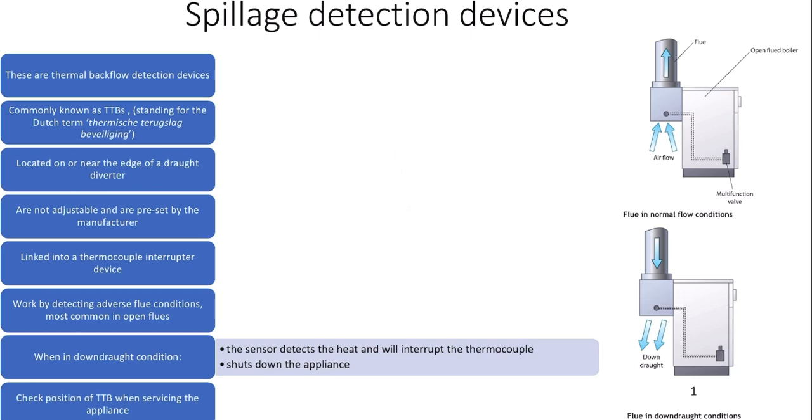They work by detecting the differences in heat under adverse, that means bad, flue conditions. When a flue is spilling in downdraft conditions, the sensor detects the heat and will interrupt the thermocouple system. This, in turn, shuts down the appliance.